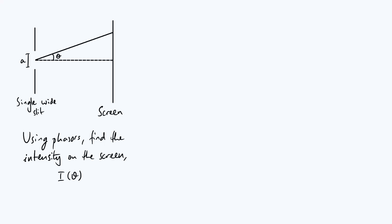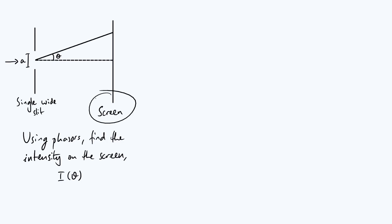Hello everyone. In this video we're going to investigate diffraction from a slit of finite width. The setup is shown in the diagram. We're going to have some wave coming in from left to right, passing through this single wide slit with a width of a, and we're going to put a screen on the right-hand side and derive an expression for the intensity of the wave as it arrives on the screen.